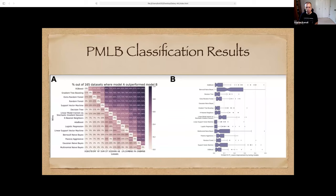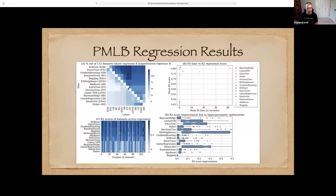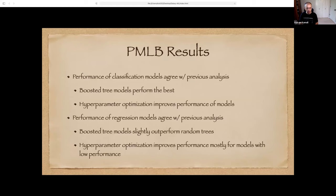The same analysis applies to regression. Certain methods, for example extra trees, yield the same R-squared score but take much longer to run, so they should be avoided. The results we obtained agree with the results in the original study, showing that Galaxy ML can be used to solve real-world machine learning problems.